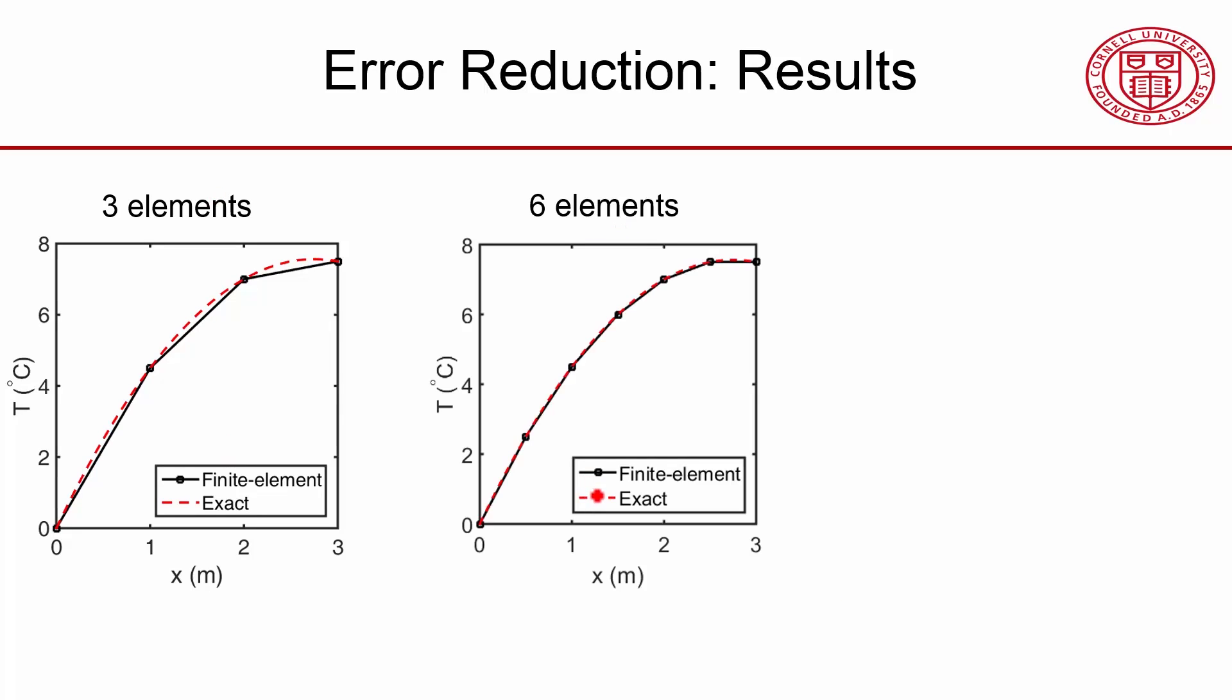This is the solution with six linear elements. And you can see that it's better than with three linear elements. So now I have one, two, three, four, five, six linear polynomial segments. And particularly you can see that the derivative here, or the slope, matches better than over here. And we know that derivative is very important because it's related to the flux.